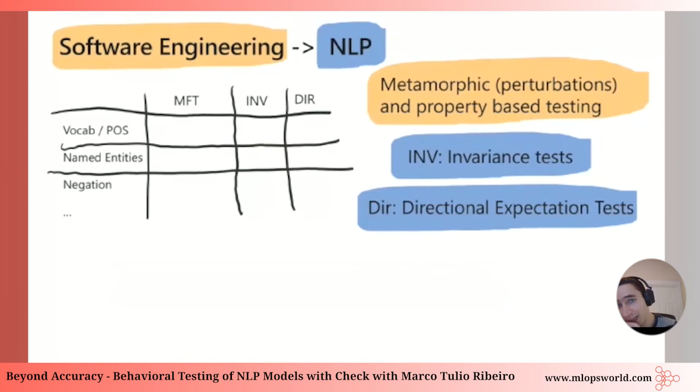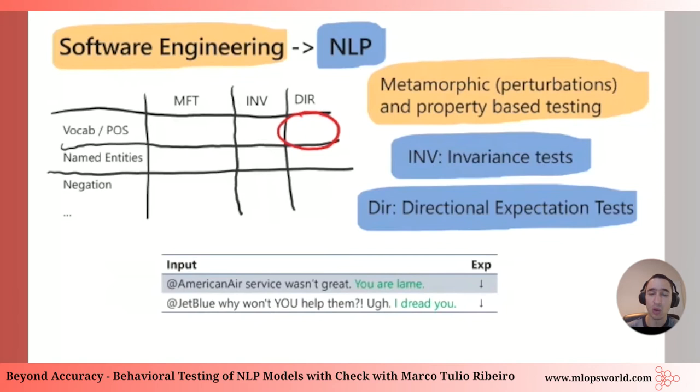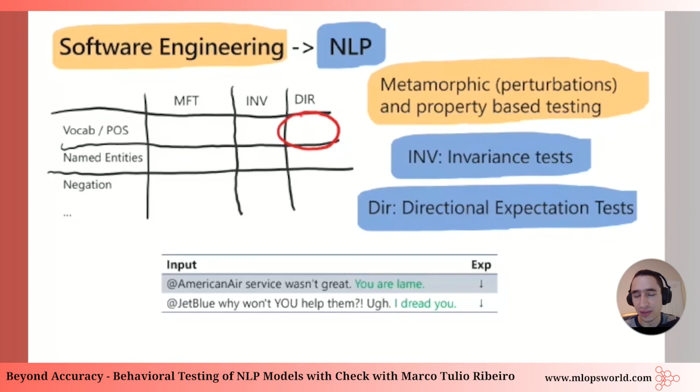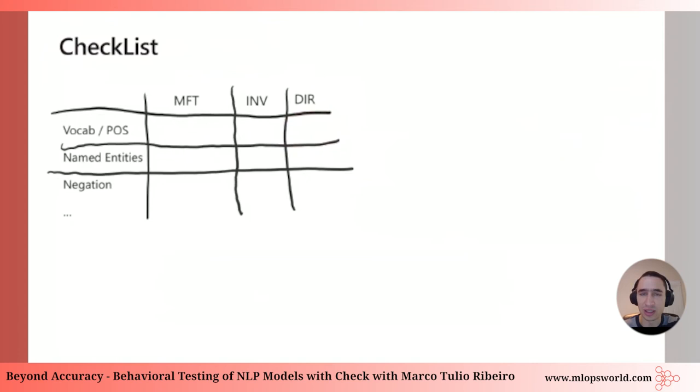Another kind is the directional expectation test. Instead of expecting invariance, we expect a certain property of the output. For vocabulary testing, one perturbation is adding very negative sentences to the end of examples — like adding 'I hate you, you're lame.' The expectation is that sentiment should not become more positive. It can remain positive or neutral, but adding such phrases should not increase positivity. That's a directional expectation test.